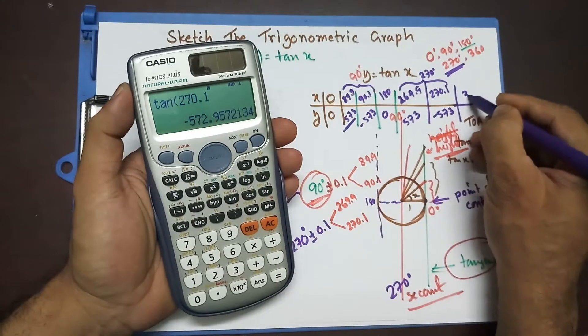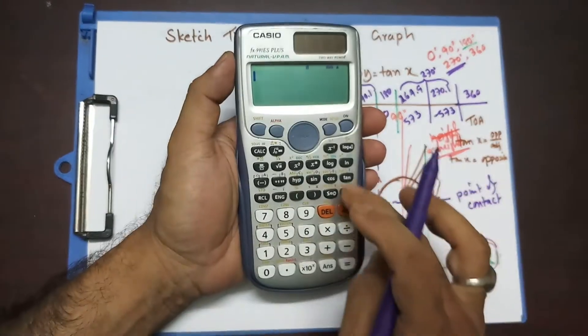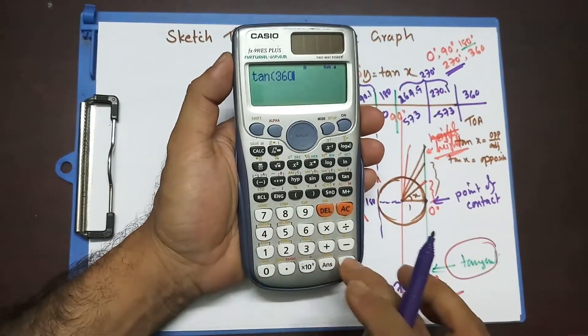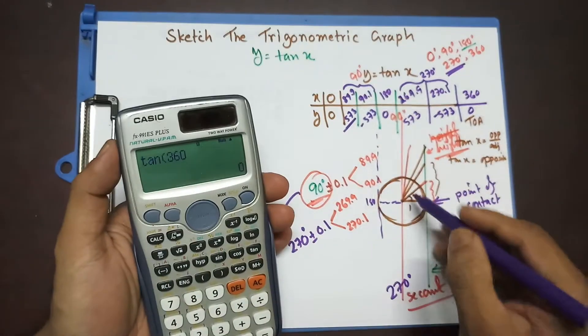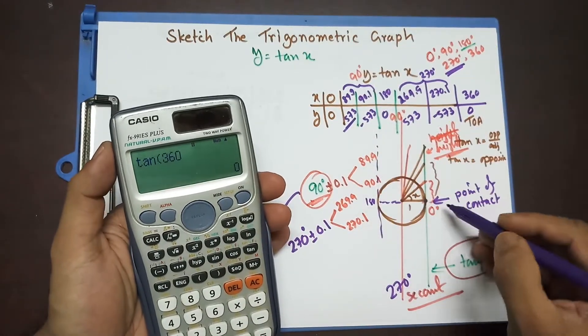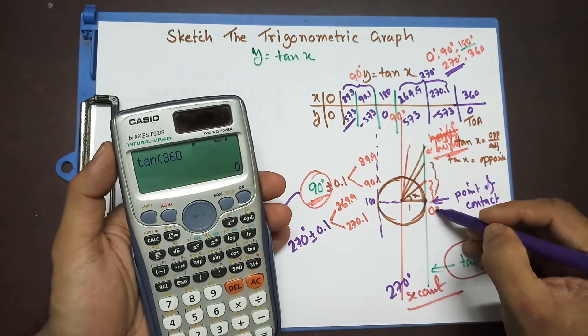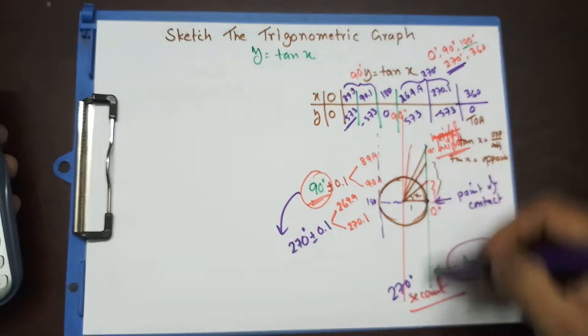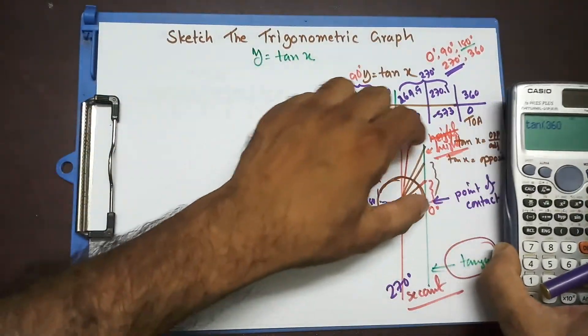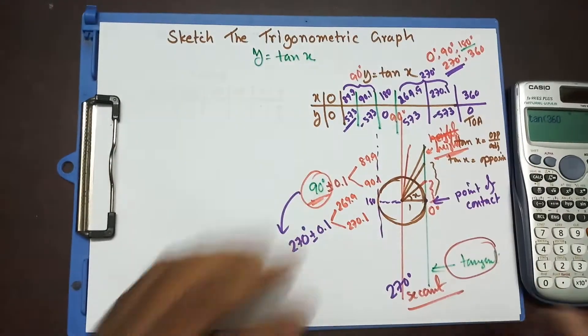Now, last one is 360. Let's see what happened. Am I going to have any values here or not? Yes, 0. Because 360 is nothing but the initial position 0 degree. There, tangent is 0. There is no height over here. So, this is the table I got. Now, it's time to draw this graph.